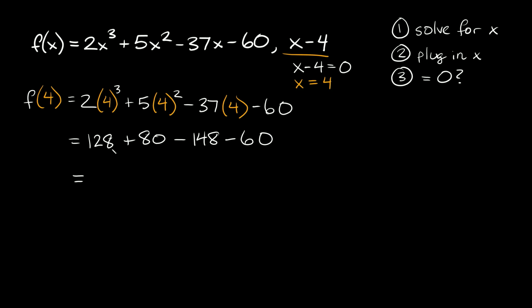So then here we get 128 + 80, which is 208, and looks like -148 - 60 is also equal to 208, so minus 208. So then this is just equal to 0.